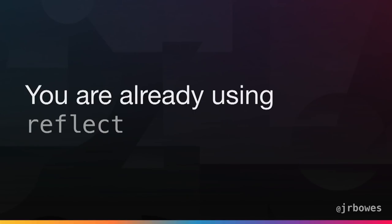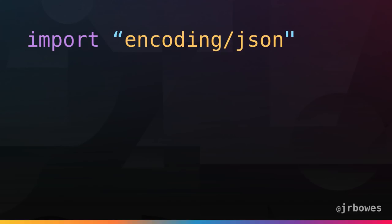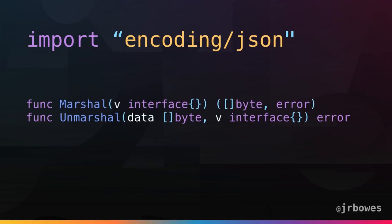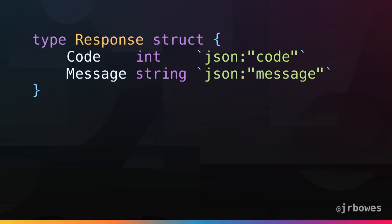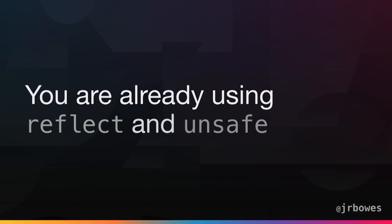The thing about reflect is that you're probably already using it. If you use encoding/json, that is using reflect under the hood. Marshaling and unmarshaling and similar libraries — any time you see an empty interface argument, there's a good chance it's using reflect. Struct tags, like the JSON tag that changes output format, are only accessible through reflect. Anything that expects you to set struct tags is using reflect. And you're also already using unsafe.